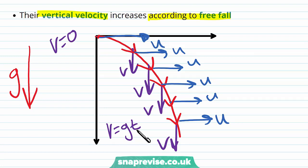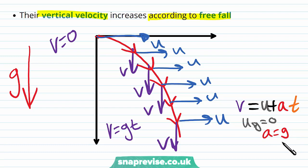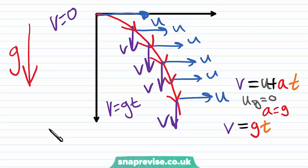Using the equation v equals gt — but where does this come from? This comes from one of our SUVAT equations. If we look at the equation v equals u plus at, we can see where v equals gt comes from. We've already said that the initial vertical velocity uy is zero, and the acceleration is equal to the gravitational acceleration g, so v equals gt.